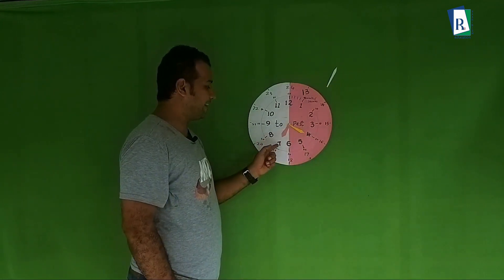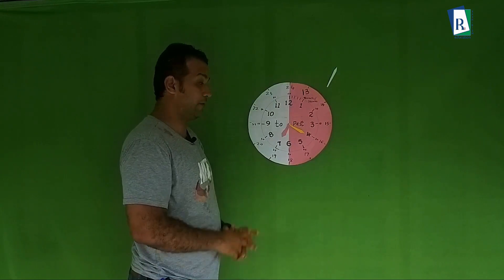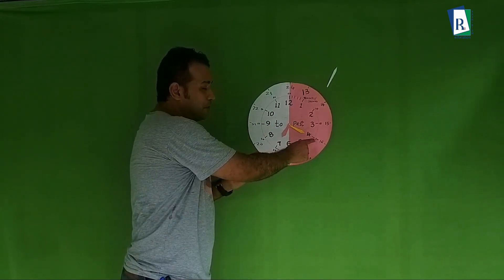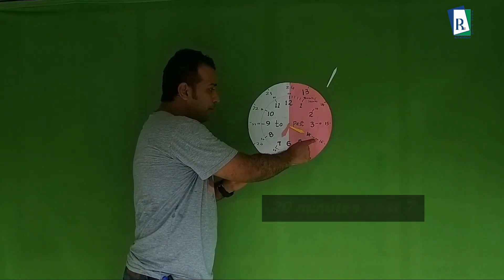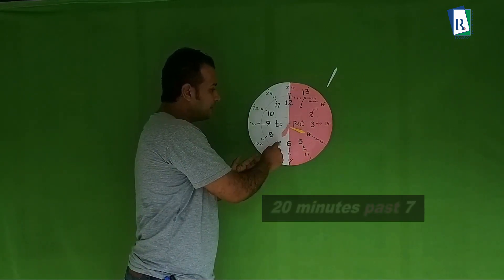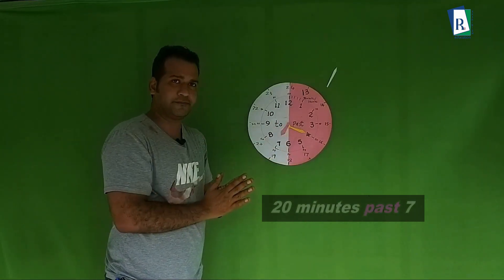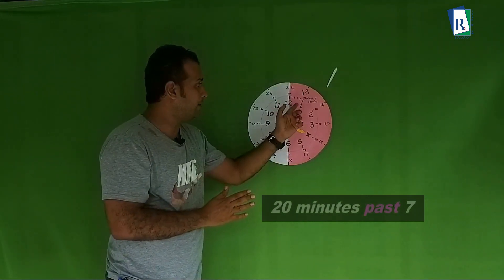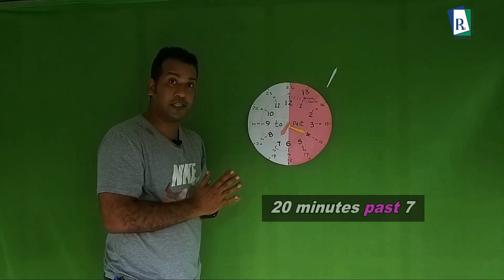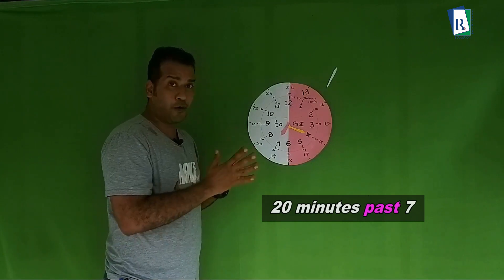The hour hand is at seven — no change — so the hour is seven o'clock. Let me read this: first the minute. The minute hand is at four: five, ten, fifteen, twenty — twenty minutes. Minute hand is at twenty minutes.